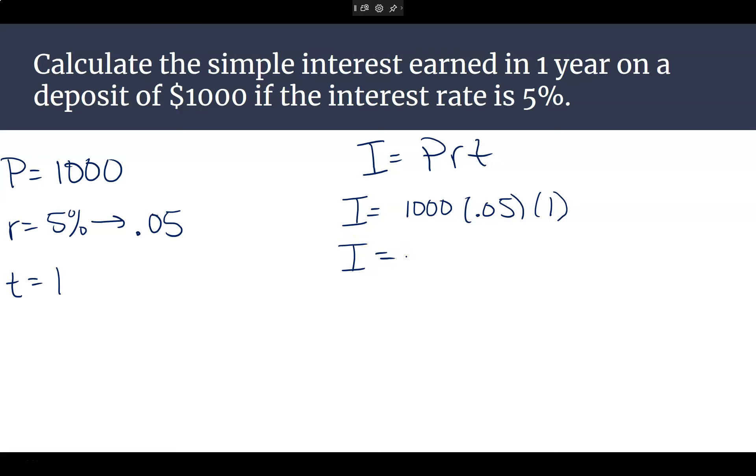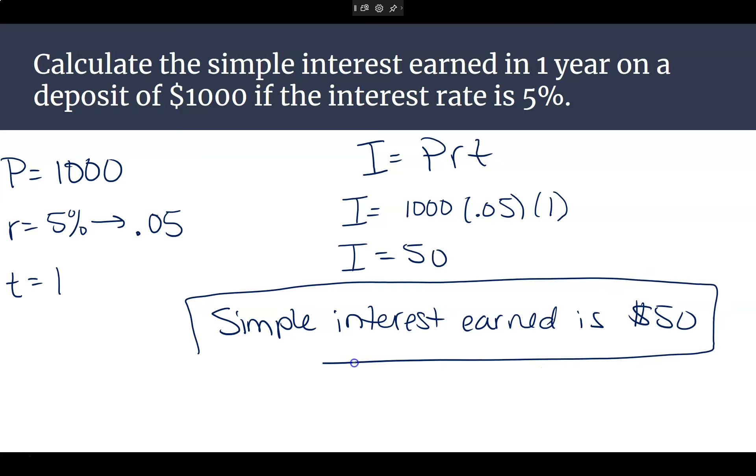What do we get when we multiply it all together? Nope. Try again. What is 1,000 times 0.05 times 1? It is just 50. There you go. It didn't ask the total amount. It just wants to know the interest earned. So the simple interest earned in this example is just $50.